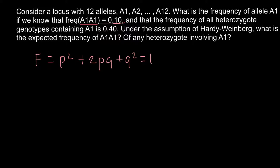For p squared we have the homozygous dominant genotype, for 2pq the heterozygous genotype, and for q squared the homozygous recessive genotype. This formula applies when we have only two alleles — capital A and small a. These two alleles can combine to form three genotypes: AA, Aa, and aa. We have only two types of alleles, so these two types produce three genotypes.